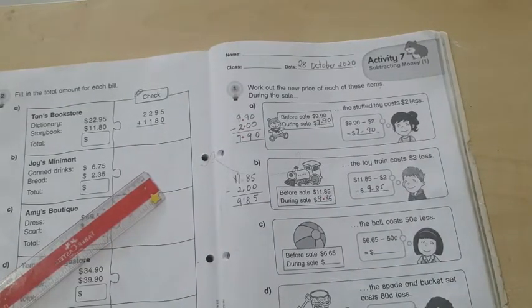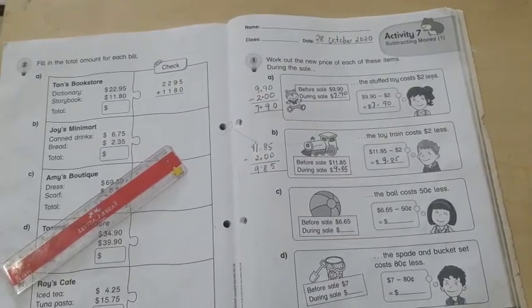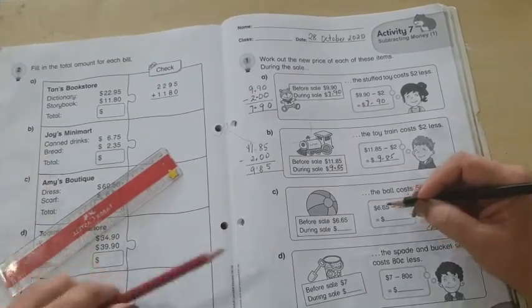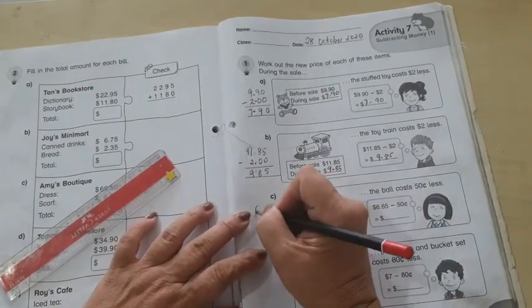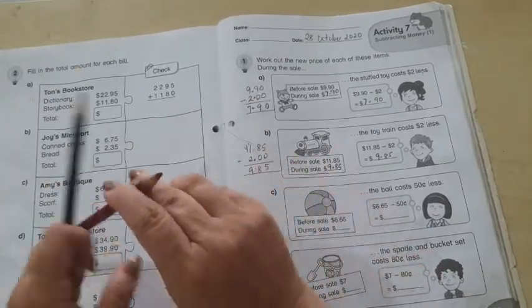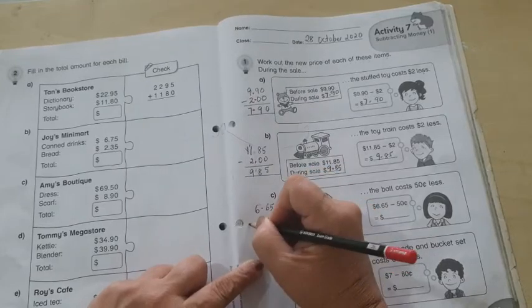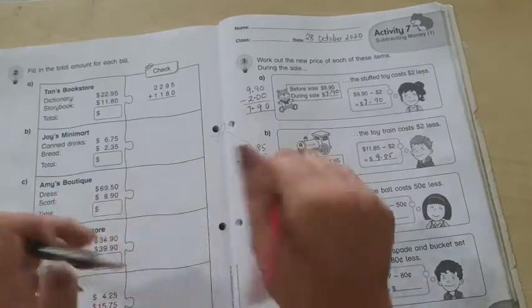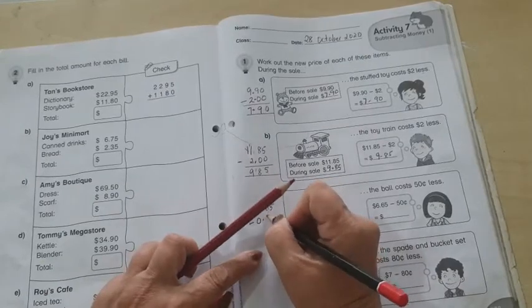Okay. Please look at the work. So, $6.65 minus $0.50. So, $6.65 minus, now, $0.50 is 0.50. Okay. 0.50.